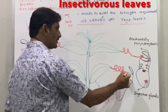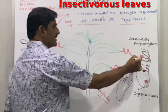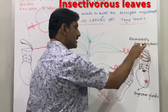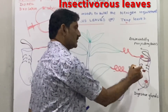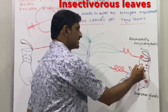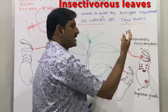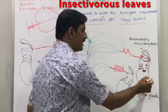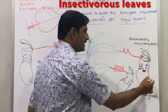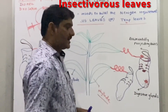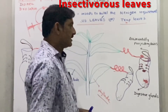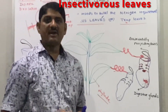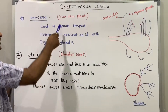So the three modifications in Nepenthes leaves are: phyllode, tendril, and pitcher. The lid is colorful and attracts insects. Once inside, the lid closes, downwardly projecting hairs prevent escape, and the inner wall's digestive enzymes digest the insect. Nepenthes is commonly known as pitcher plant and is also found in India.